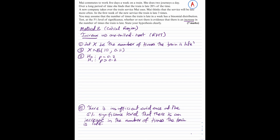Moving on to method 2, which is the critical region method. The steps in hypothesis testing remain the same apart from step 4. In step 4, I need to find the critical region, which requires working out the critical value first.